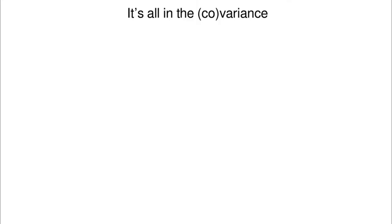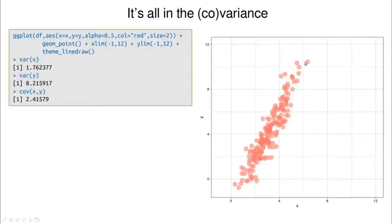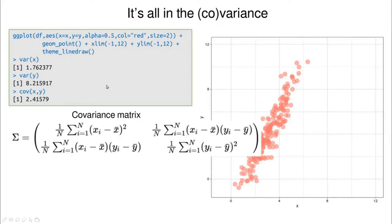Let me go back to a concept that we have discussed in the past, which is the covariance matrix. Let's play with this data set — you can define the variance of X, the variance of Y, and the covariance, and you can plug all that information into a matrix called the covariance matrix. This is the definition of variance of the data, the variance of Y, and the covariance, which is the product of X subtracting the mean value times Y subtracting its mean value.